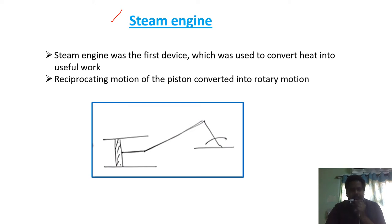In the early 18th century, the steam engine was the first device used to convert heat energy into useful work. This was the first device before the steam turbine. As you can see in this figure, this is the schematic diagram of the steam engine.